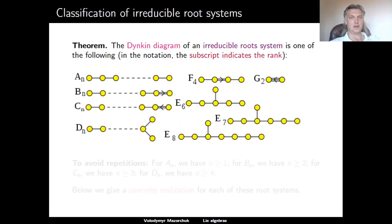Recall that in the previous lecture we proved the following theorem: the Dynkin diagram of an irreducible root system is one of the following nine diagrams. So here we have four series of diagrams and five exceptional cases.